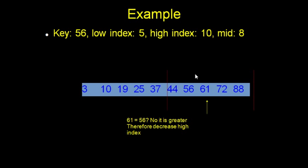Now we're only looking at this part of the array. Low index has been updated to 5, high index is 10, so the middle must be 8. At index 8, we have 61. Is 61 equal to 56? No, 56 is less than 61. So now we can reduce our searching size again.